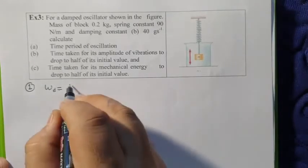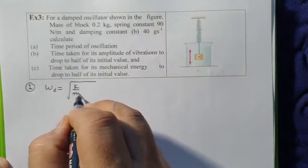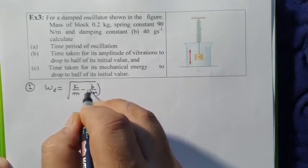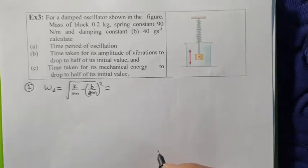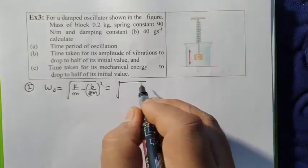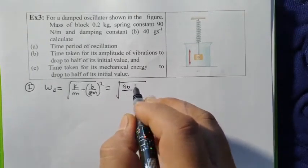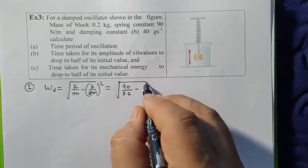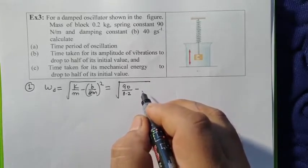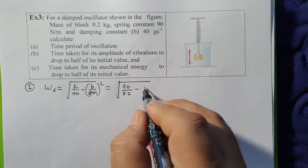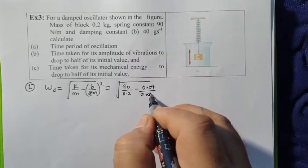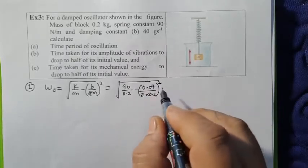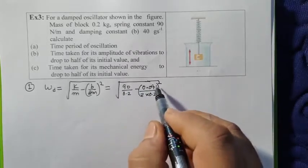Under root of k by m minus b by 2m whole square. If we put these values here, under root of 90 over mass 0.2 minus b by 2m, so b is 40 gram, convert to kg 0.04 over 2 into 0.2 whole square. You can see here this value is 450 and this value is very small.